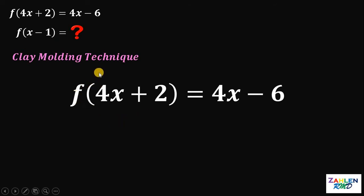Now, the question is, how does this technique work? First thing to do is to notice that we have 4x plus 2. Our goal here is to mold this 4x plus 2 into x minus 1. To do that, let's replace x with x over 4.